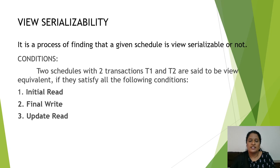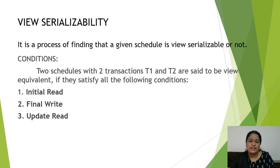View Serializability is the process of finding whether a given schedule is view serializable or not. Two schedules with transactions T1 and T2 are said to be view equivalent if they satisfy all three conditions: the first is Initial Read, the second is Final Write, and the third is Update Read. Let's see each condition one by one.